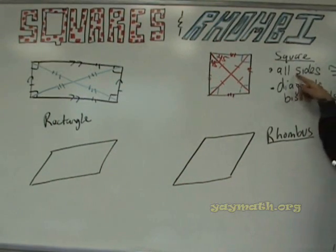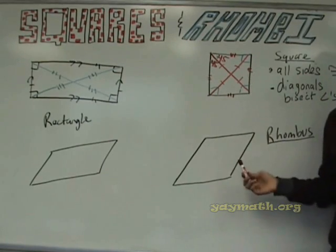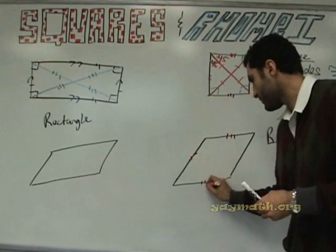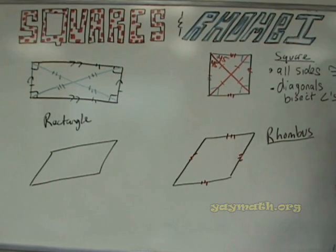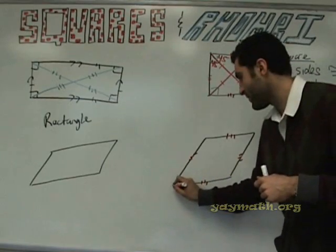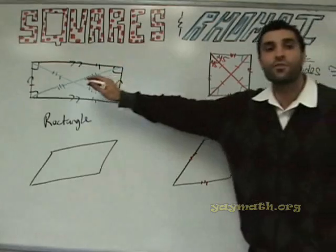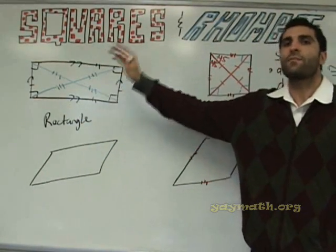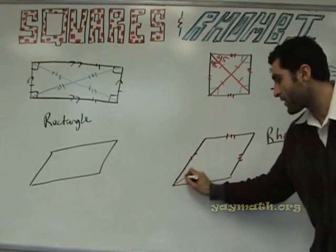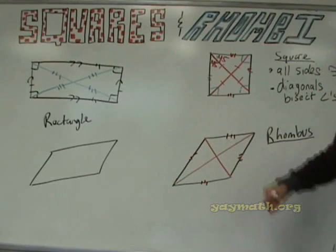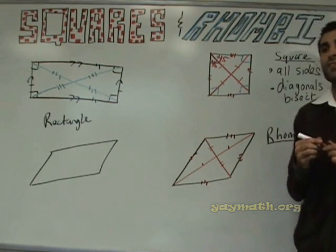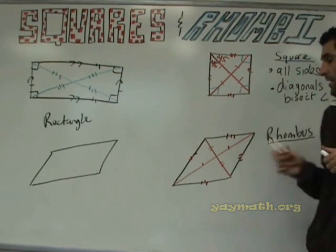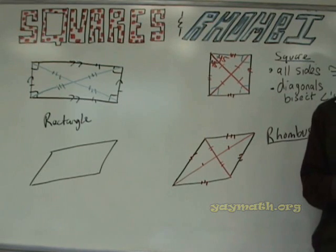Here's the question — are all sides the same in a rhombus? It's a square tilted, so yes, all sides are the same. Do the diagonals bisect the angles still? Yes. But wait — are the angles all equal? No. Are the sides parallel? Yes. And are the diagonals congruent anymore? No, they're not. What about opposite angles — are they still equal? Yes. Same-side angles? Still supplementary.